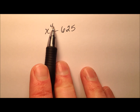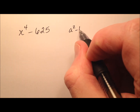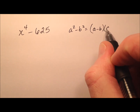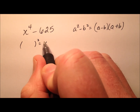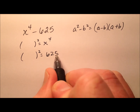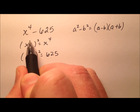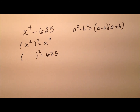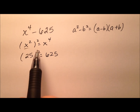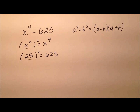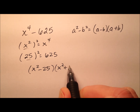In the next example, we have x to the 4th minus 625. Using our formula, a squared minus b squared equals a minus b times a plus b, we ask: what got squared to give us x to the 4th, and what got squared to give us 625? To get x to the 4th by squaring, it had to be x squared — because the power of a power gives 2 times 2 equals 4 — and the square root of 625 is 25. So the factorization is x squared minus 25 times x squared plus 25.